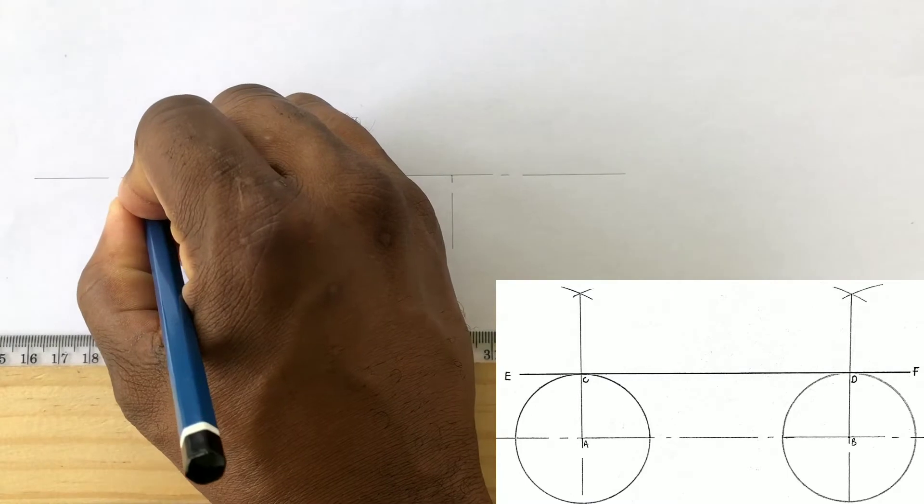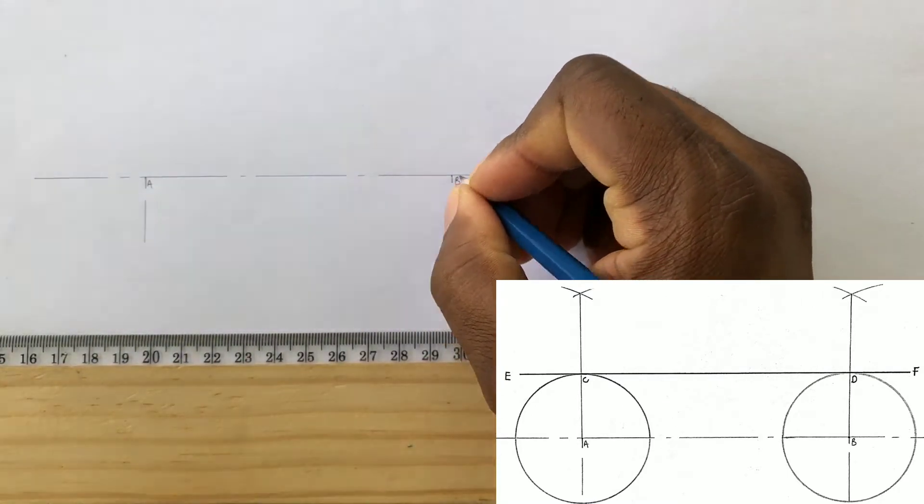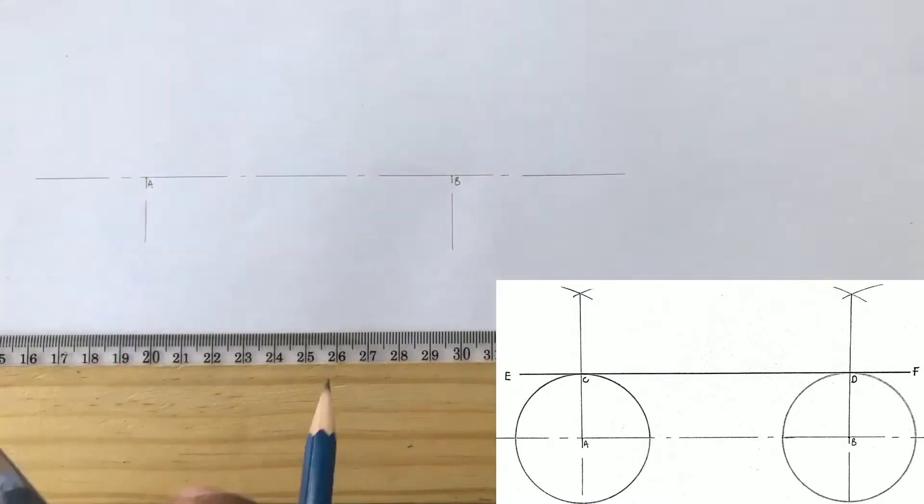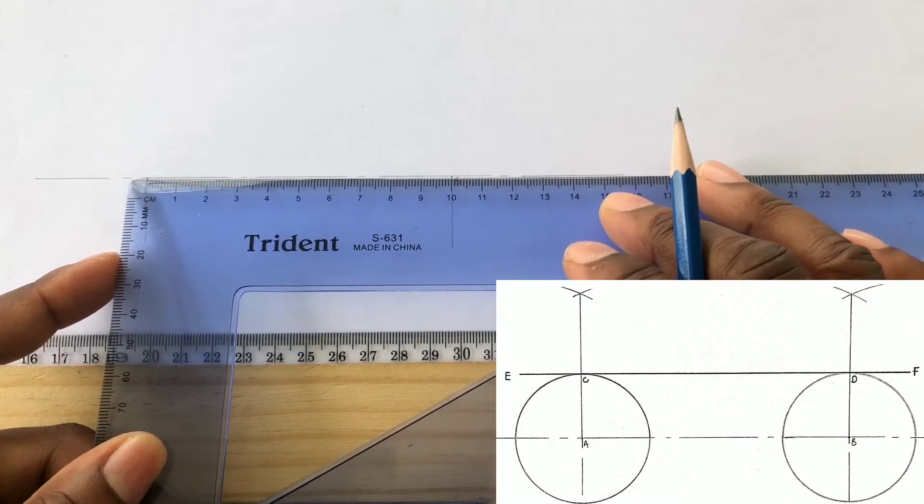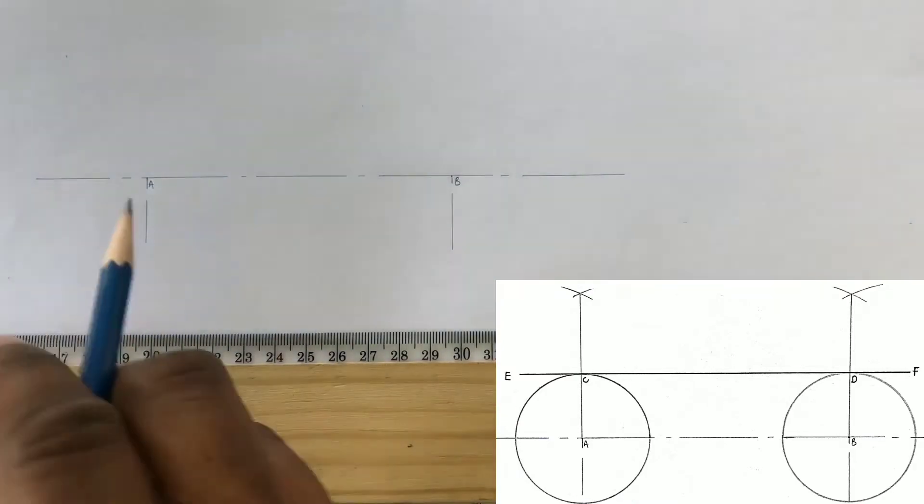We will label the intersections A and B. You can measure the distance between A and B to ensure that you get 100 millimeters.